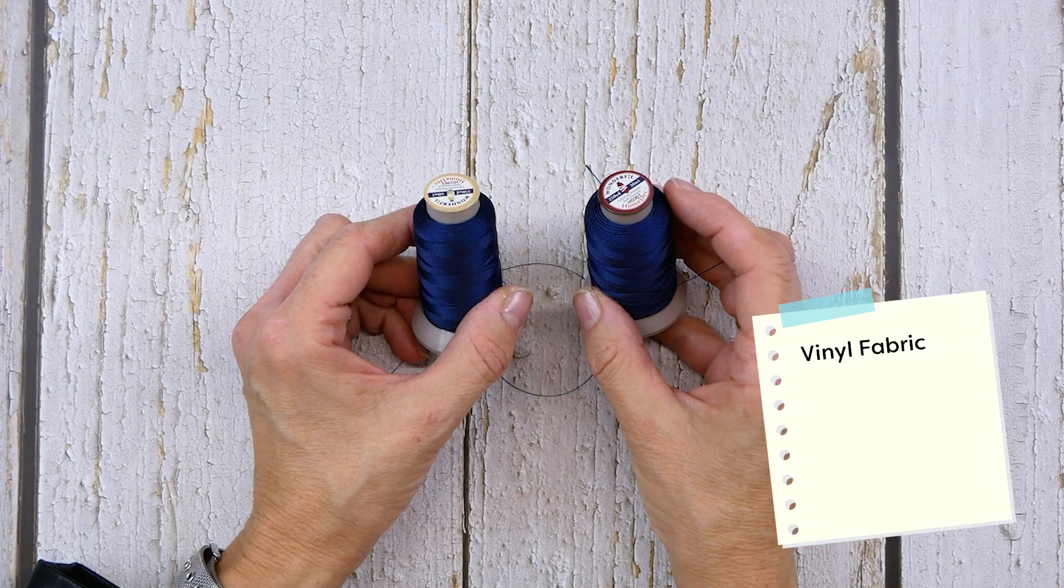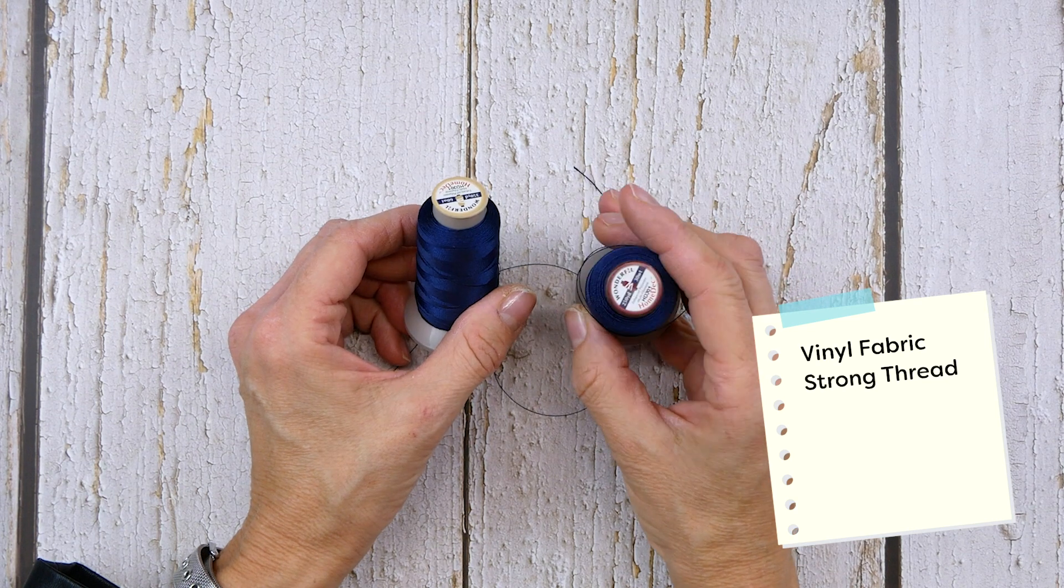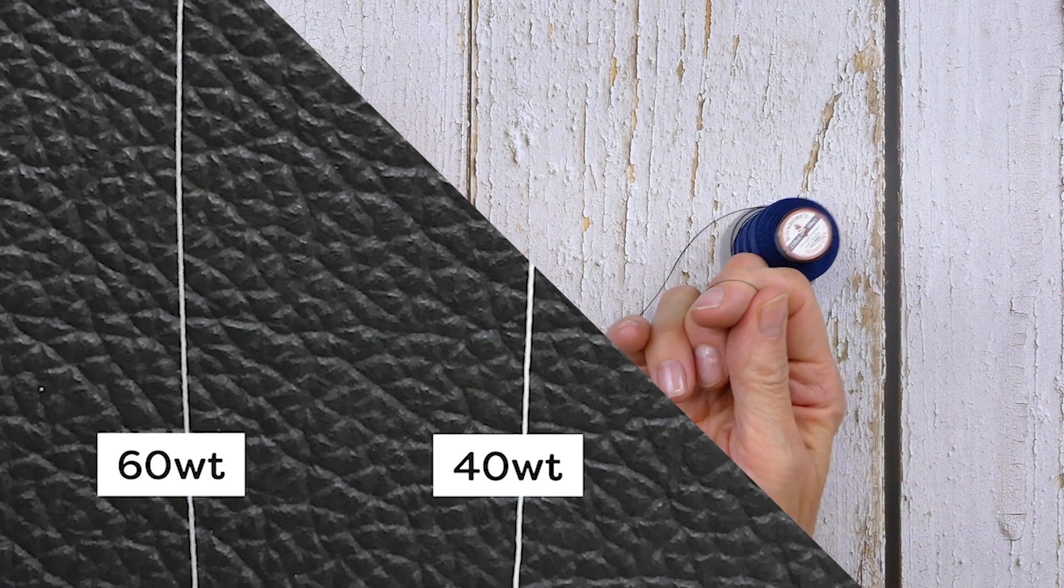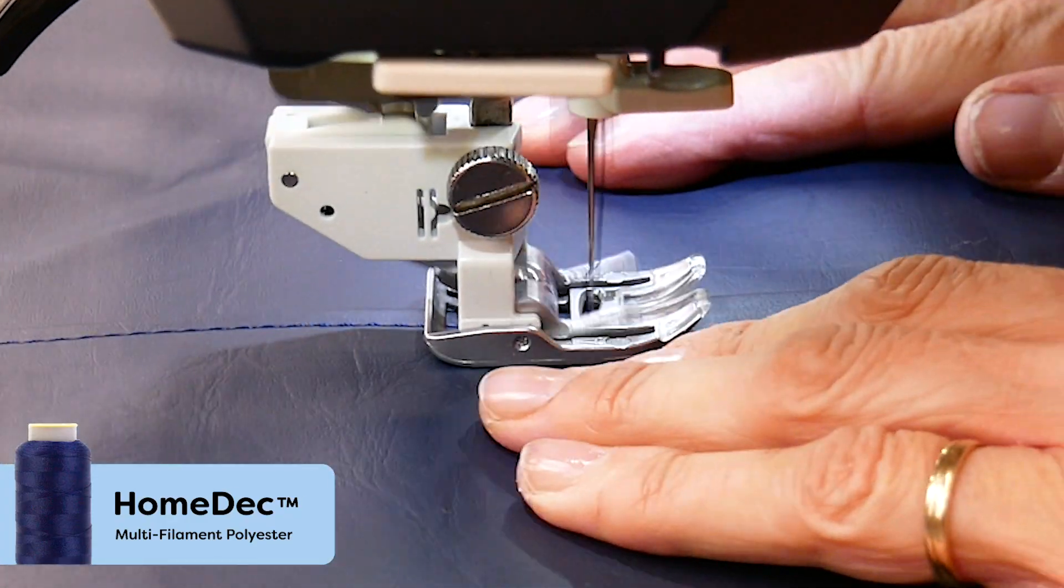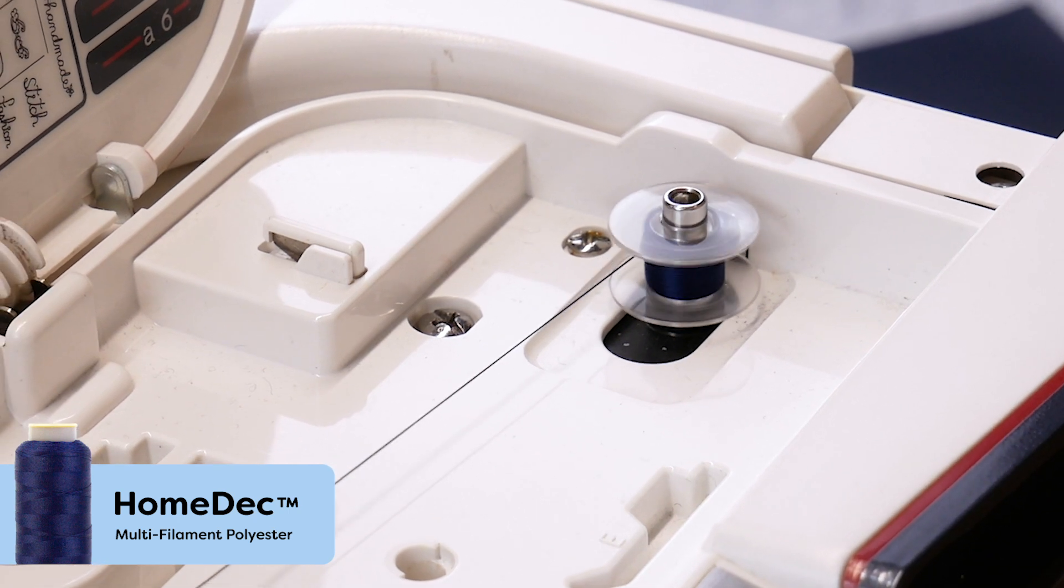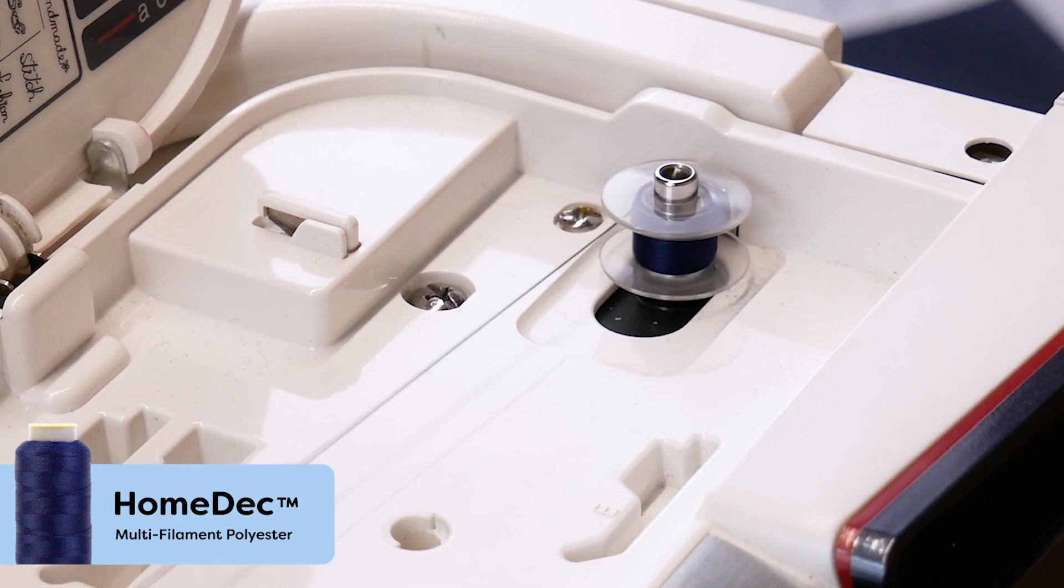When you are sewing with these heavier fabrics, I recommend using home deck thread. Home deck is available in three weights for different effects. I will be using the 60 weight to sew my seams and the 30 weight to add some bold top stitching lines. In both cases I will use the 60 weight in the bobbin to maintain the seam strength.